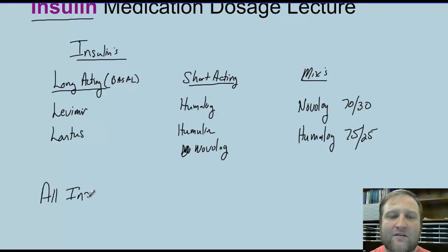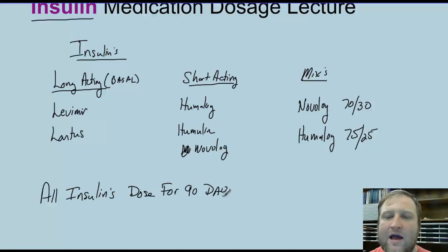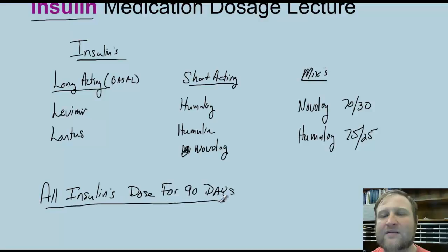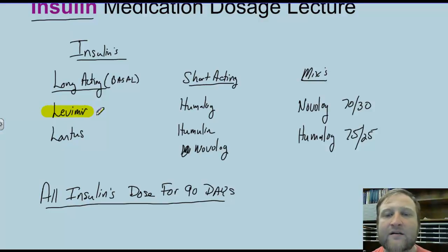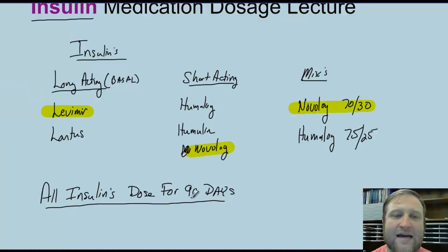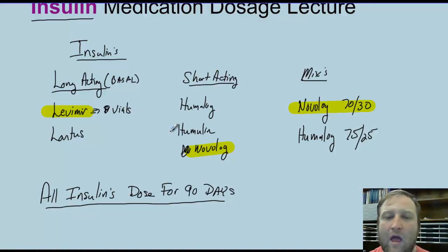All these insulins are dosed for 90 days. In the prior video we discussed some insulins that dosed every 120 days, but insulins will be sent to us every 90 days on behalf of the patient. I want to highlight Levemir, Novolog, and Novolog 70-30 — these will only come in the form of vials.